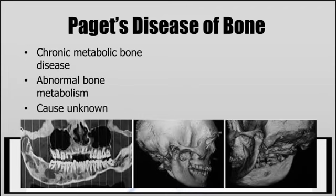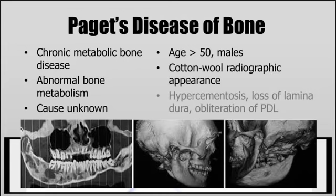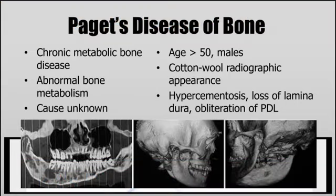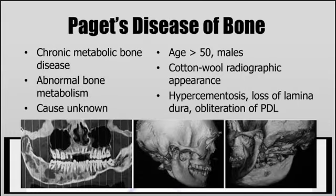Paget's disease of bone is a chronic metabolic bone disease involving a disruption in the replacement of old bone with new bone. This typically occurs in males over the age of 50, but the cause is unknown. Paget's disease is characterized by a radiographic cotton wool appearance. In the jaw, we would see hypercementosis, loss of the lamina dura, and obliteration of the PDL. It is a slow-progressing disease usually treated with medications that reduce the breakdown of bone.